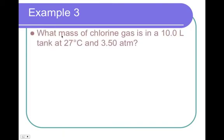First question: What mass - right there, this tells you that we are using PVM = mRT - of chlorine gas, I bet we're going to need that information, is in a 10-liter tank at 27 degrees Celsius and 3.5 atmospheres.